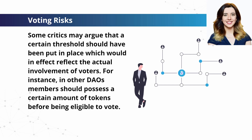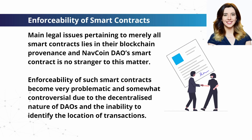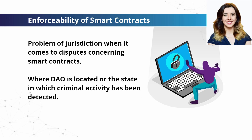For instance, other DAO members should possess a certain amount of tokens before being eligible to vote. One of the main legal issues pertaining to nearly all smart contracts lies in their blockchain provenance, and Navcoin DAO's smart contract is no stranger to this matter. The enforceability of such smart contracts becomes very problematic and somewhat controversial due to the decentralized nature of DAOs and the inability to identify the location of transactions. There is also the problem of jurisdiction when it comes to disputes concerning smart contracts — which jurisdiction will prevail: the one where the DAO is located, or the state in which criminal activity has been detected?